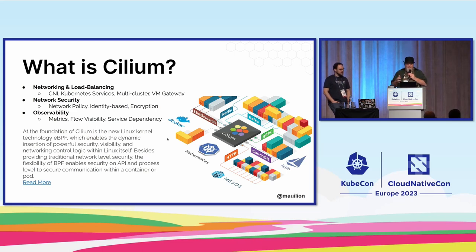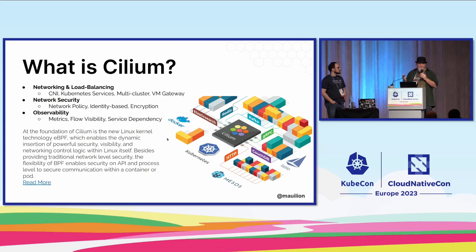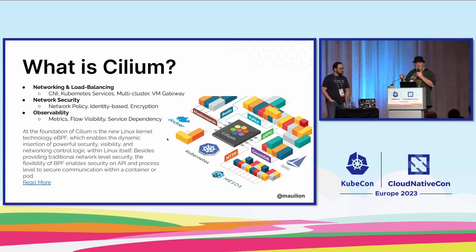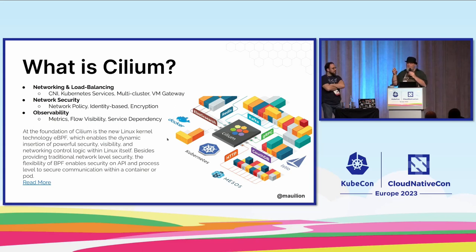Cilium was the first effort we put together. It's a container networking interface for a Kubernetes cluster where we run a Cilium agent on every node. When you see a new pod get created on a kubelet, the kubelet makes a call to the CNI. In Cilium's case, we actually generate an eBPF program for that pod and connect that using the TC layer to the network namespace that the pod has been created in. We then use TC calls and these tools in eBPF to enforce things like network policy.